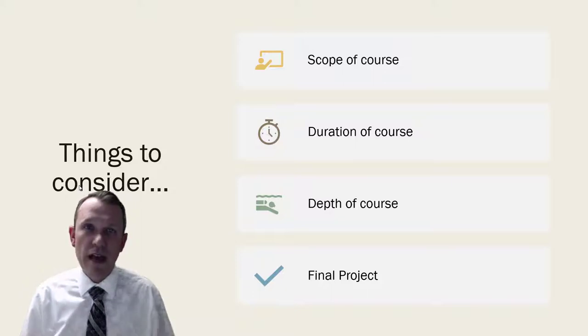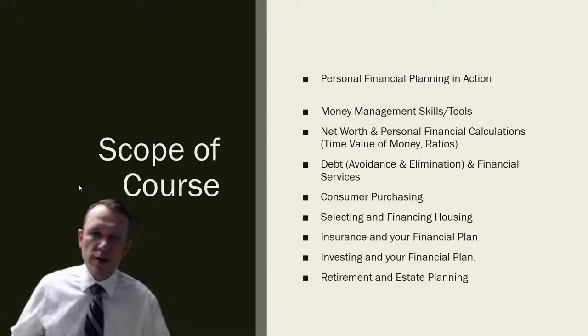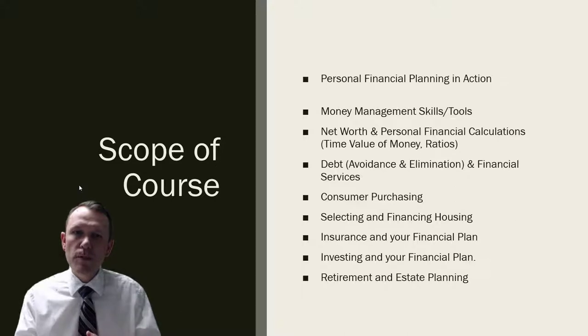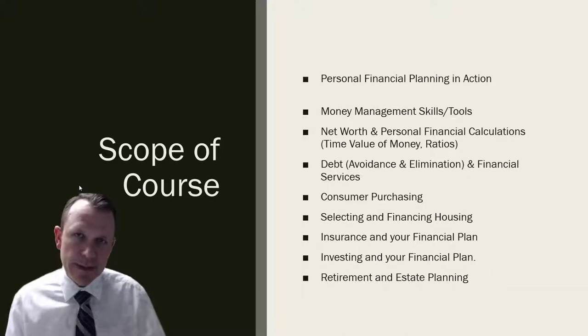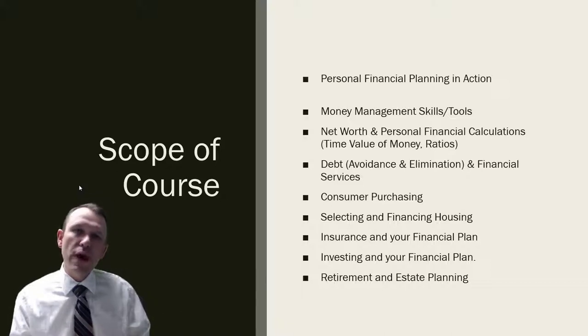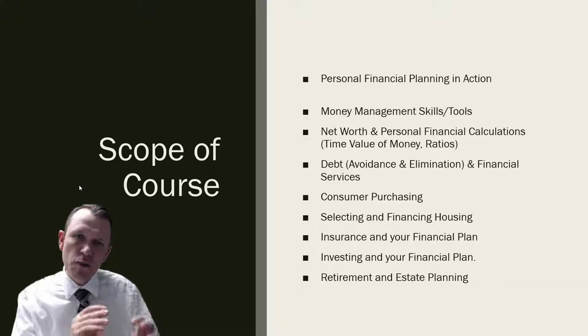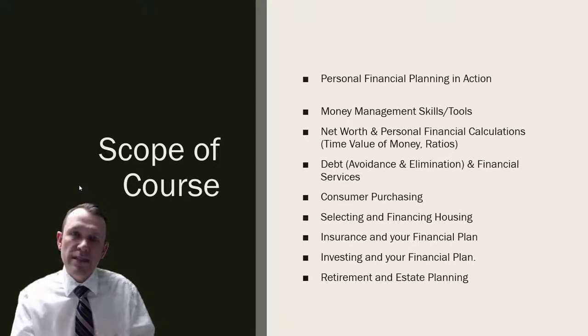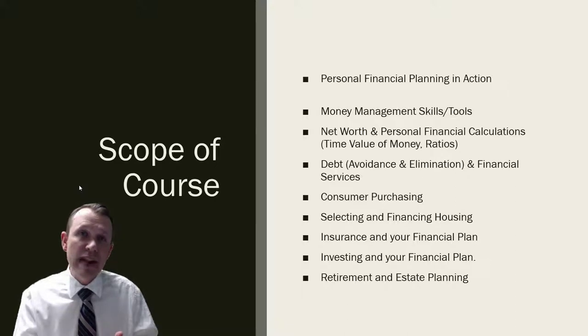So the scope of the course: these bullet points basically outline the scope of the course for us. We've got personal financial management planning in action, so we cover a topic and then say how does this work in your personal financial plan. Number two is money management skills and tools - that's things like budgeting, understanding how to track expenses and income, and how we save for the future.